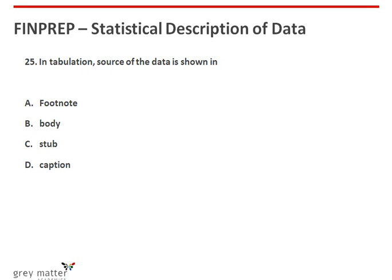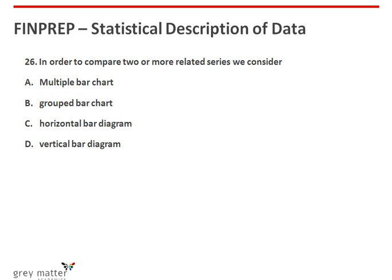Twenty-fifth problem: in tabulation, the source of the data is shown in the footnote. The answer is option A. Twenty-sixth question: in order to compare two or more related series, we consider a multiple bar chart. The answer is option A, which says multiple bar chart.